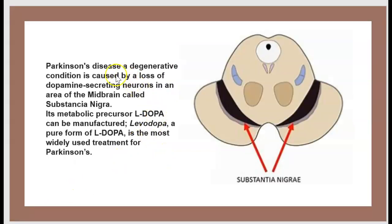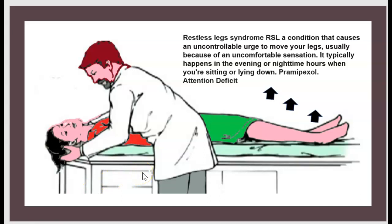Parkinson's disease is a degenerative condition caused by loss of dopamine-secreting neurons in the area of the midbrain called the substantia nigra. Its metabolic precursor levodopa can be manufactured. Levodopa, a pure form, is the most widely used treatment for Parkinson's. Restless leg syndrome is a condition that causes an uncomfortable urge to move your legs, usually because of an uncomfortable sensation, typically happening in the evening or nighttime or when sitting or lying down. It is treated with pramipexole.